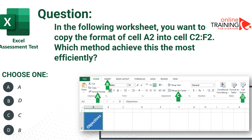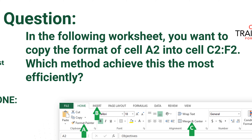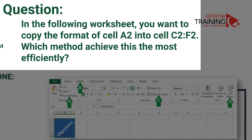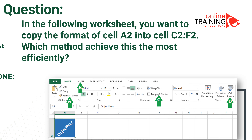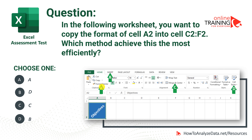A lot of times you might be tested on your knowledge of Excel formatting features. In this question: in the following worksheet, you want to copy the format of cell A2 into cells C2 through F2. Which method would you use to achieve this most efficiently? The four choices presented are Format Painter, Insert, Merge and Center, and Cell Styles. Which option would you choose?